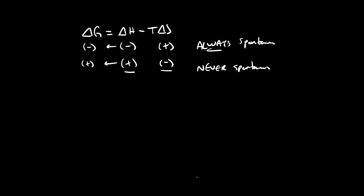So if we have opposite signs of delta H and delta S — delta H negative but delta S positive, or delta H positive and delta S negative — then we'll always have a spontaneous or never-spontaneous reaction. But if both values are negative, or both values are positive, then we're going to produce temperature-dependent reactions.